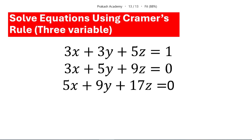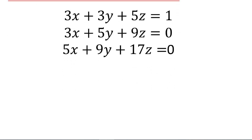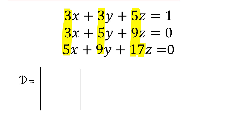To solve for this, we can use Cramer's rule, and in that case first we have to find the determinant value. The determinant will be — the first row gives us the columns of the determinant. So this is the first column, this is the second column, and this is the third column. We will have 3, 3, 5 and the second column will be 3, 5, 9 and the third column will be 5, 9, 17.